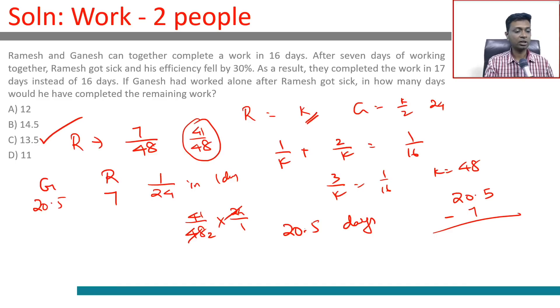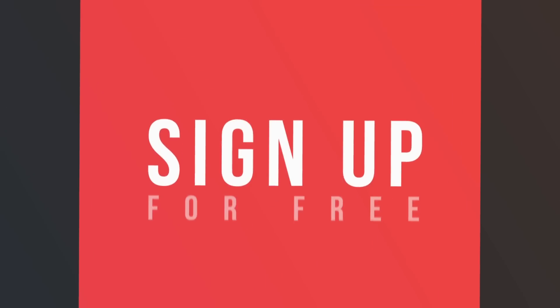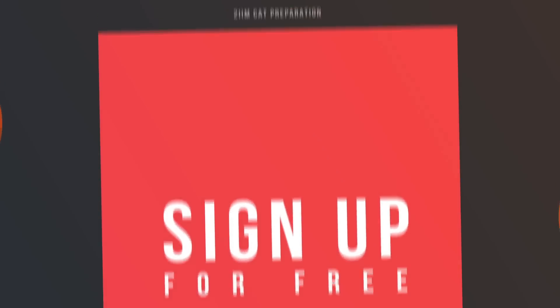Ganesh puts in total of 20.5 days, Ramesh puts in 7 days. After Ramesh disappears, Ganesh has to put 13.5 more days of effort. The moment we find that Ganesh equals twice Ramesh, this question becomes very simple.